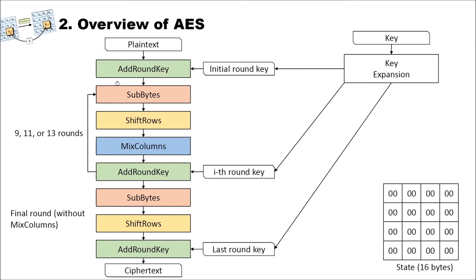We have first 9, 11, or 13 same rounds, and in the last or final round, the mix column step is missing. The round keys go into the add round key function. We have the initial round key, then round keys that go into the loop, and a final round key in the last add round key. AES itself has what the inventors called the 'state' — a 16-byte array, displayed as a four-by-four grid.